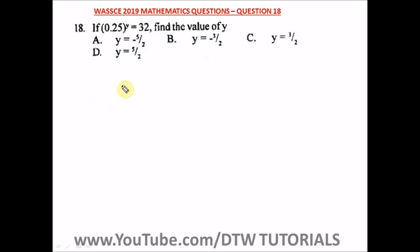Question 18 of the WASSCE 2019 mathematics past question says: If 0.25 raised to power y is equal to 32, find the value of y. Let's try to simplify this.